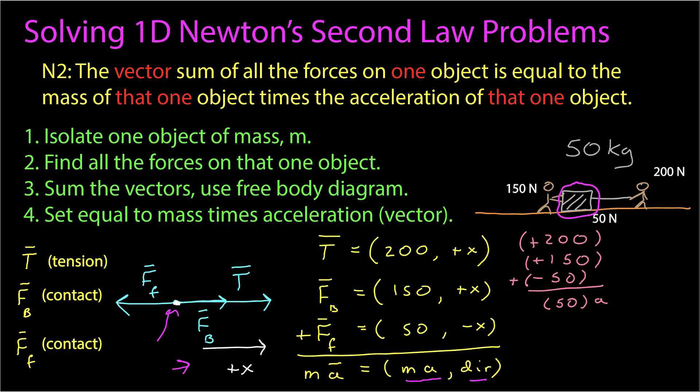But we can now create an easy scalar relationship, given our notation for vectors in one dimension. Tension is a positive 200, plus the contact force, which is a positive 150, added to the frictional force, which is a negative 50, is equal to the mass, 50 times the acceleration. And solving that is easy enough. We get 300, the net force, is equal to 50 times the acceleration. Or a is equal to 6 meters per second squared.